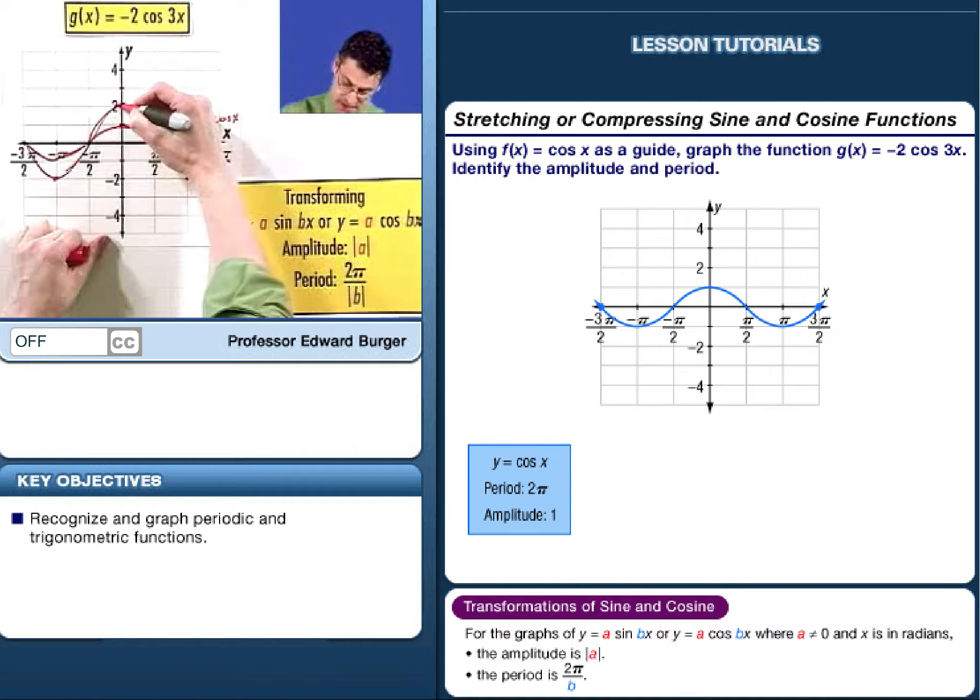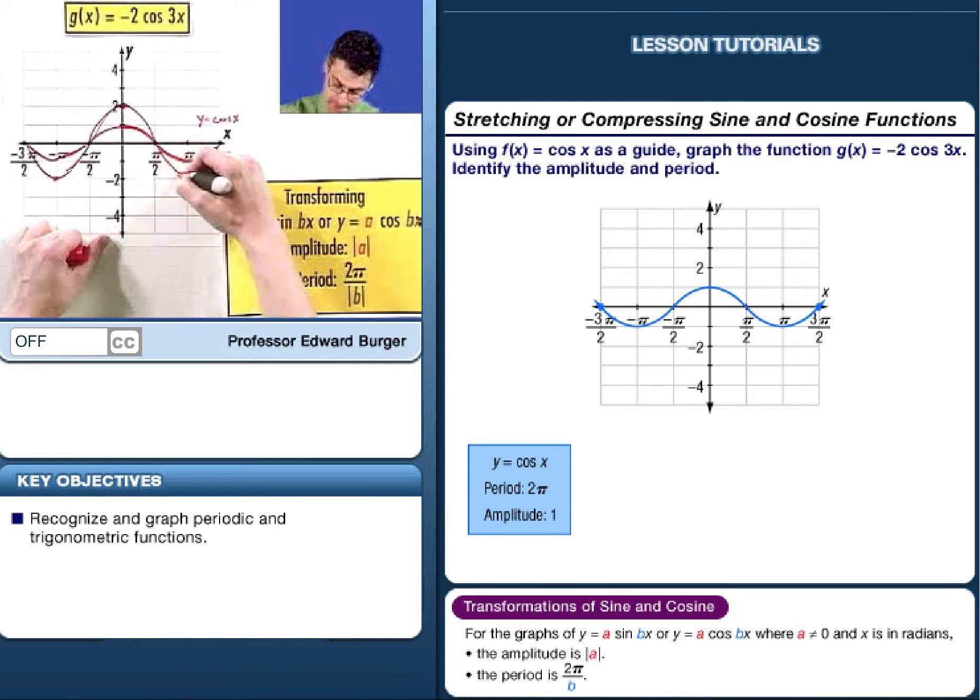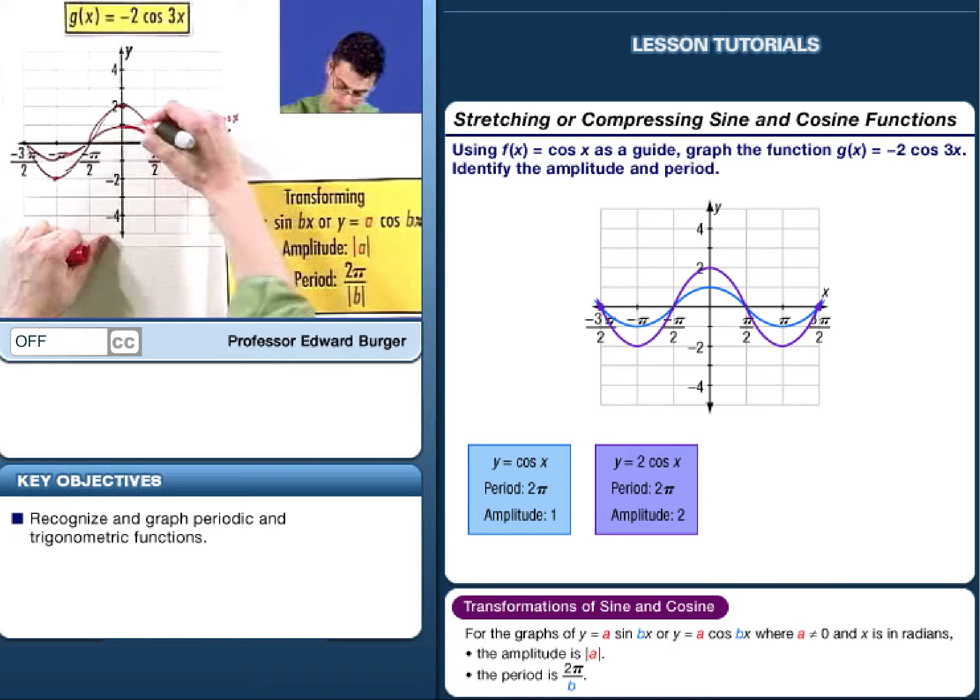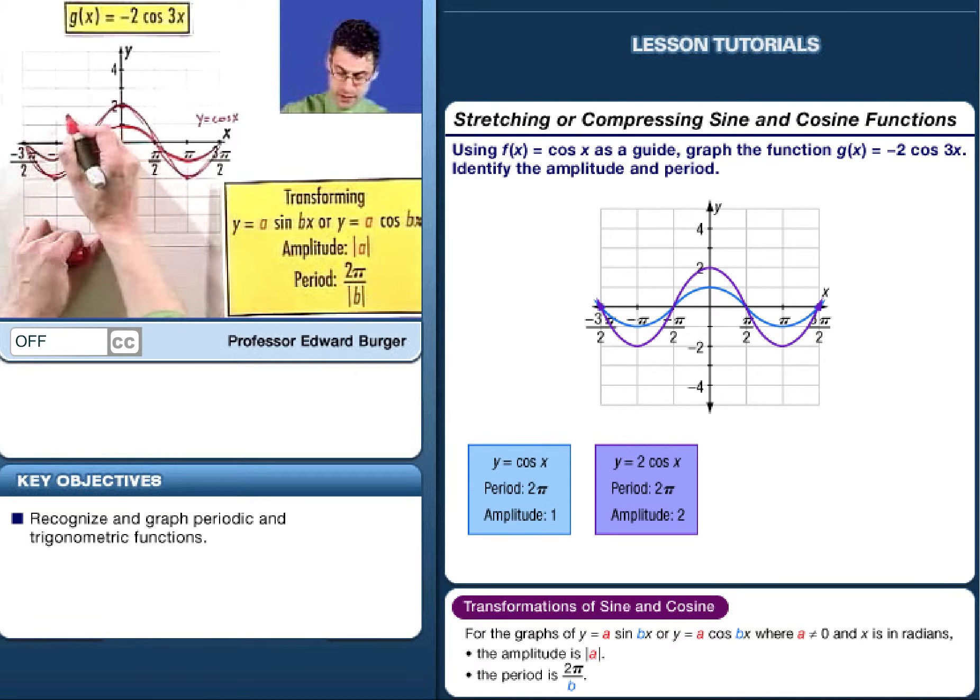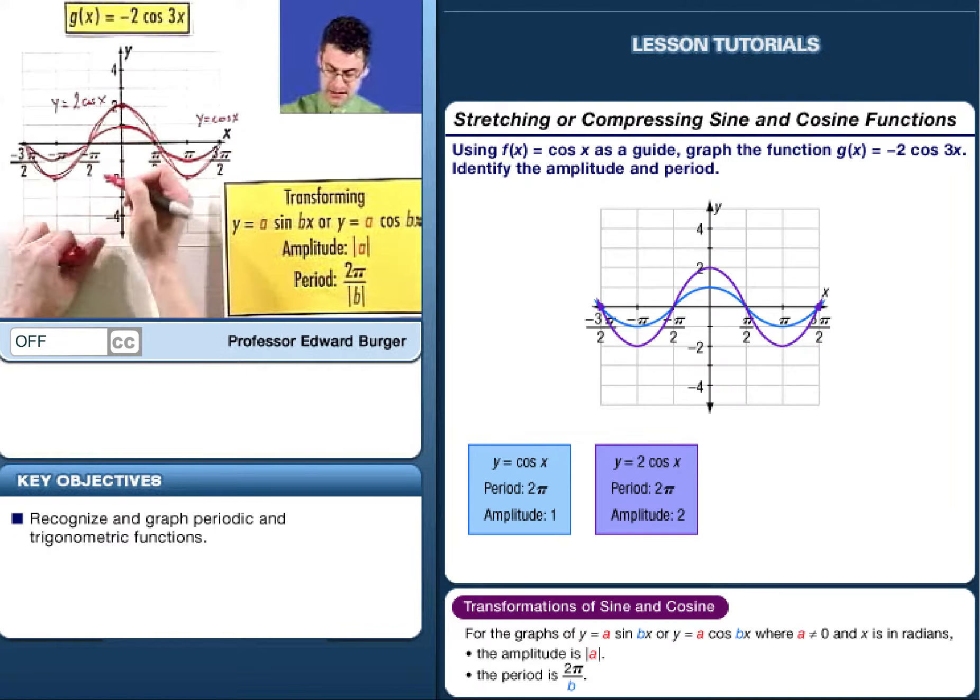It's much more exaggerated. It's an exaggerated cosine function. I'm making it deliberately a little bit wavy so you can sort of see it. That is y equals 2 cosine x.